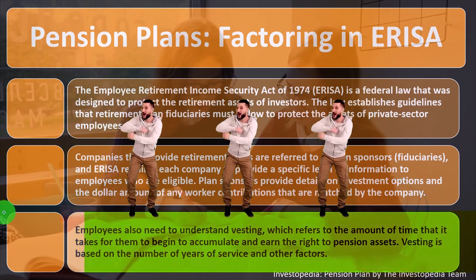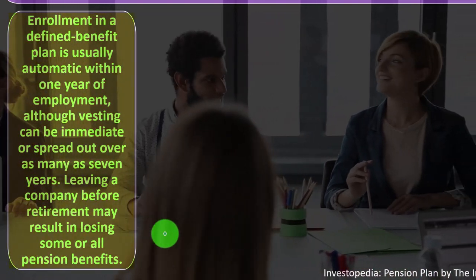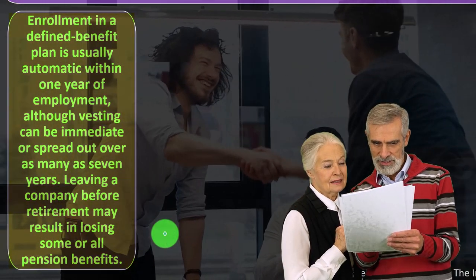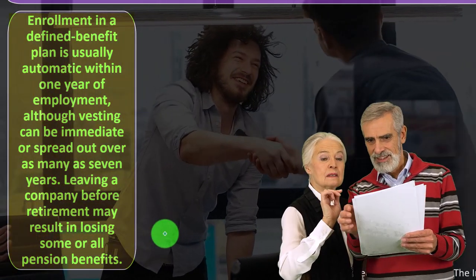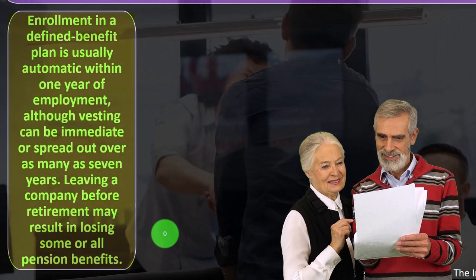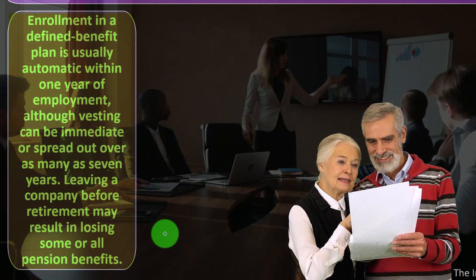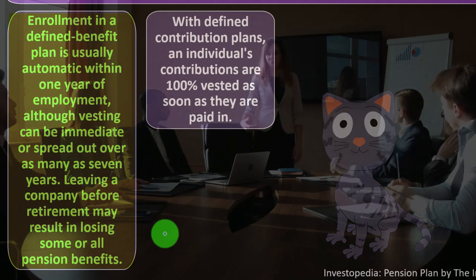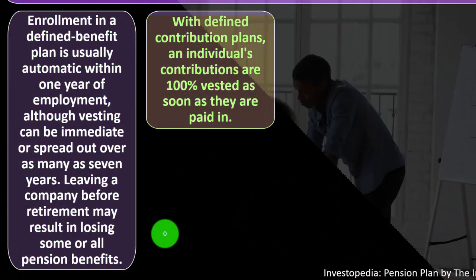Enrollment in a defined benefit plan is usually automatic within one year of employment, although vesting can be immediate or spread over as many as seven years. Leaving a company before retirement may result in losing some or all pension benefits — this is used as a tool to retain good employees. Contractors, by contrast, stay only as long as the money is there.